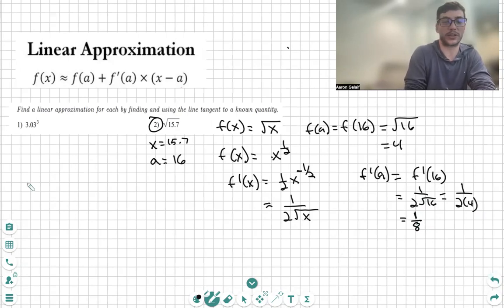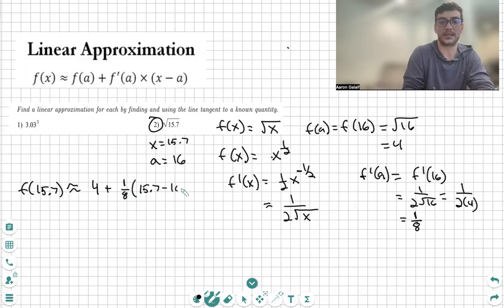So now we're going to plug and chug into our approximation. f(15.7) is approximately f(a), which we know as 4, plus f'(a), which we know as 1/8, times (15.7 minus a). We clean up some more. We see this is negative 0.3.